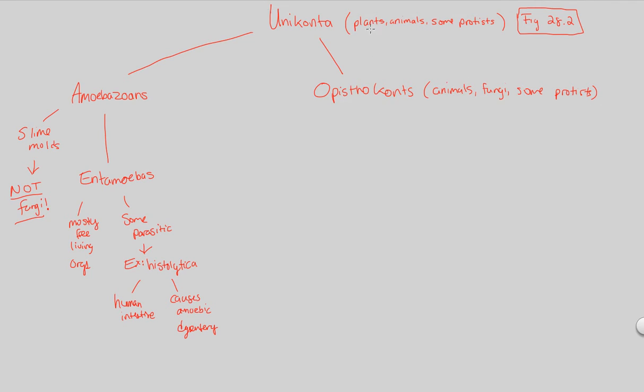So they do not include plants. Opisthokonts do not include plants. Where are plants usually found? Plants are usually found from the archaeplastida clade, that monophyletic group of archaeplastida. Some plants are found in Unikonta, as we'll see when we talk about plant diversity.